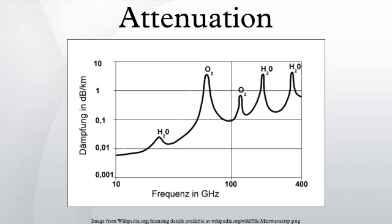Light scattering depends on the wavelength of the light being scattered. Thus, limits to spatial scales of visibility arise, depending on the frequency of the incident light wave and the physical dimension of the scattering center, which is typically in the form of some specific microstructural feature. Since visible light has a wavelength scale on the order of one micrometer, scattering centers will have dimensions on a similar spatial scale. Thus, attenuation results from the incoherent scattering of light at internal surfaces and interfaces. In crystalline materials such as metals and ceramics, most of the internal surfaces or interfaces are in the form of grain boundaries that separate tiny regions of crystalline order. When the size of the scattering center is reduced below the size of the wavelength of the light being scattered, the scattering no longer occurs to any significant extent, giving rise to the production of transparent ceramic materials.